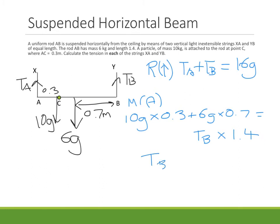So straight away from that, I'm going to be able to work out TB. So double-check that you're using your calculator correctly. 10 times 9.8 times 0.3 plus the second moment divided by 1.4, and that's going to give us our tension of 50.4 newtons.